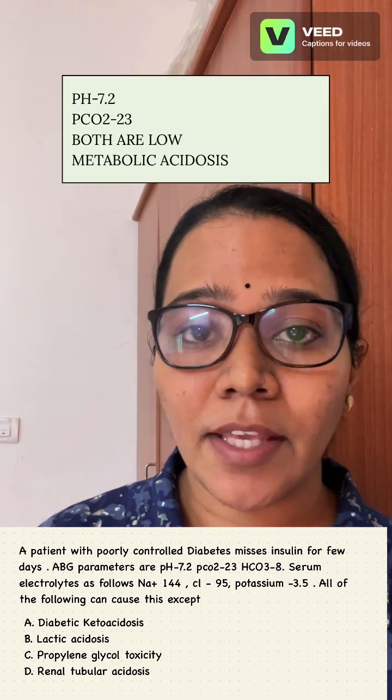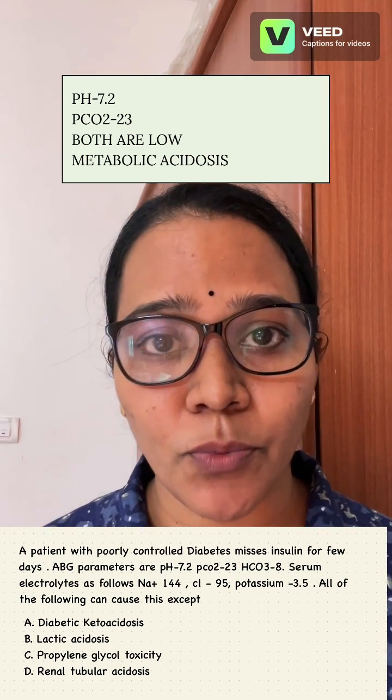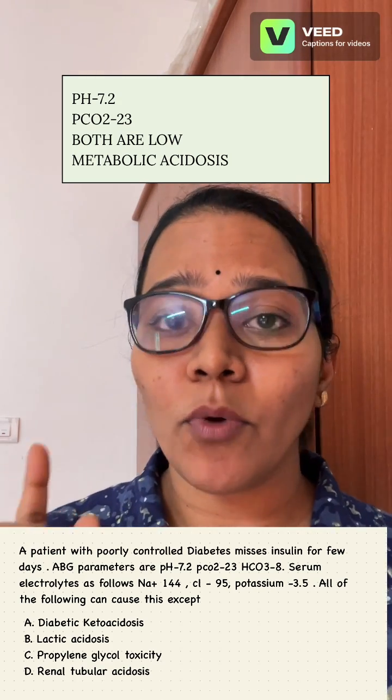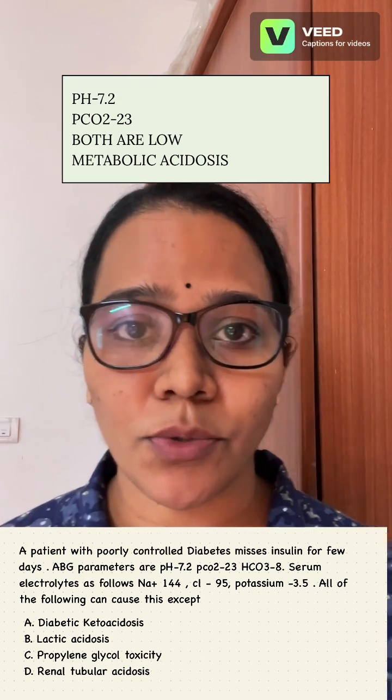So here, pH is 7.2 and PCO2 is 20. Both are in the low direction, so it is metabolic acidosis.